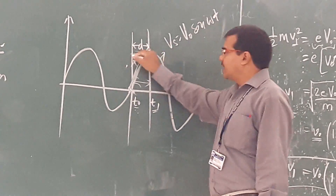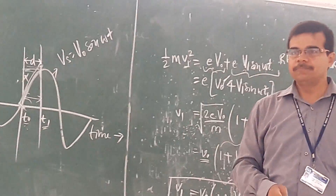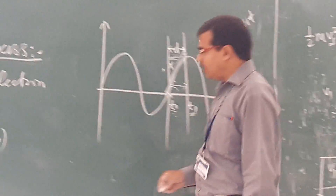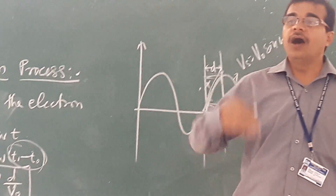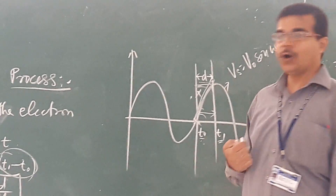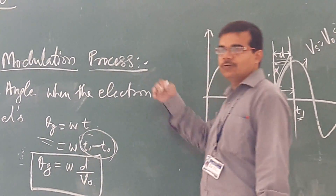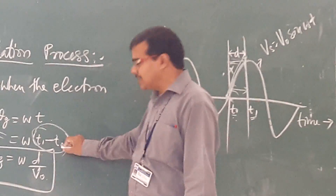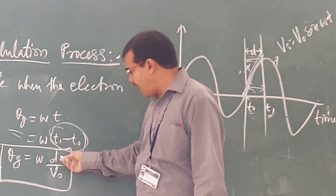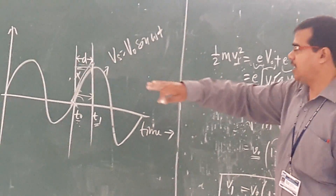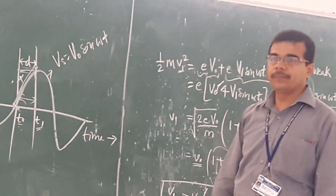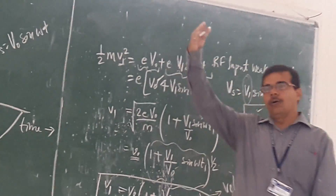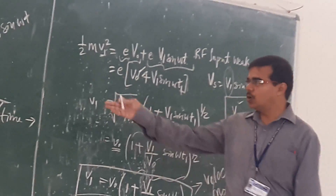Let us assume that this distance is small d. We can replace the time term with d/v₀, where v₀ is the velocity, since time equals distance divided by velocity. So this time can be replaced as distance divided by velocity. This gives the equation for the change in phase angle when the electron is accelerated from 0 to the positive peak.